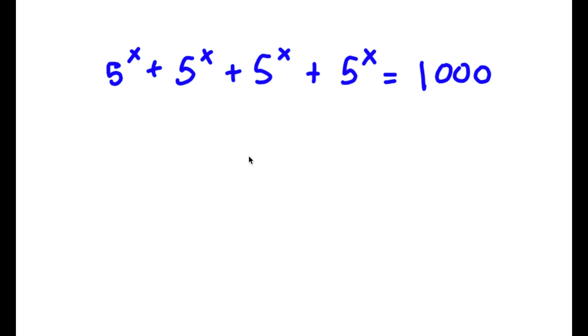Alright, so in this problem, I have phi to the power of x plus phi to the power of x plus phi to the power of x plus phi to the power of x is equal to 1000. So to solve this, I'm going to first start by factoring out phi to the power of x.